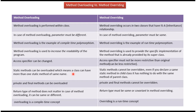Static methods can be overloaded, which means a class can have more than one static method of the same name. Static methods cannot be overridden — even if you declare a same static method in a child class, it has nothing to do with the same method of the parent class.